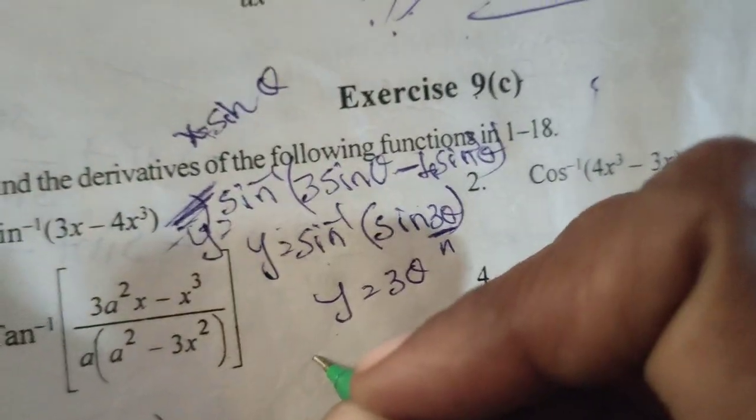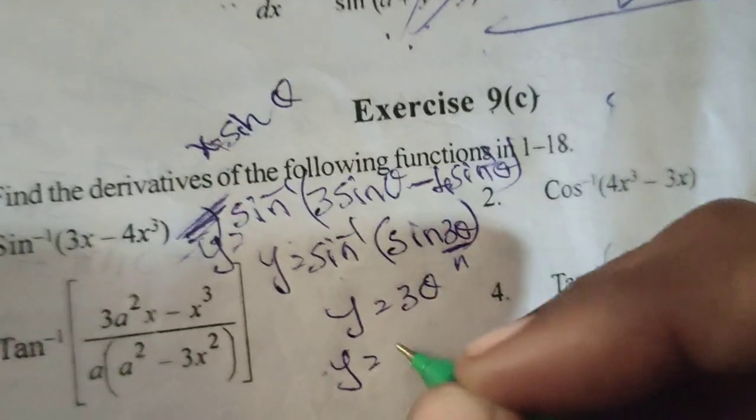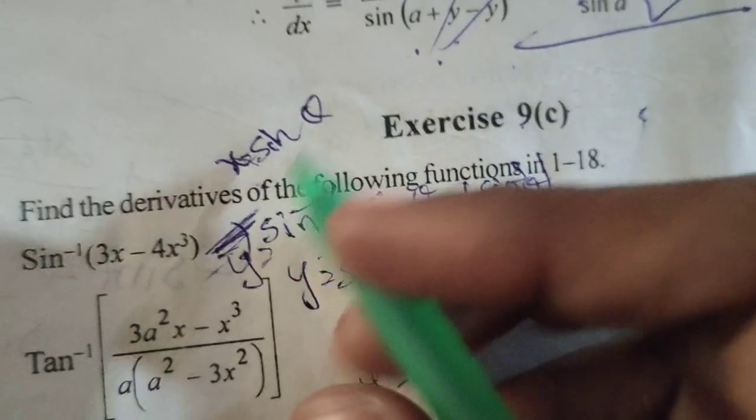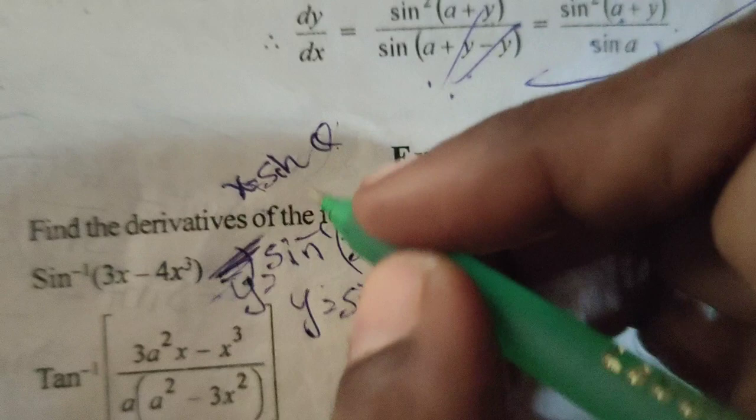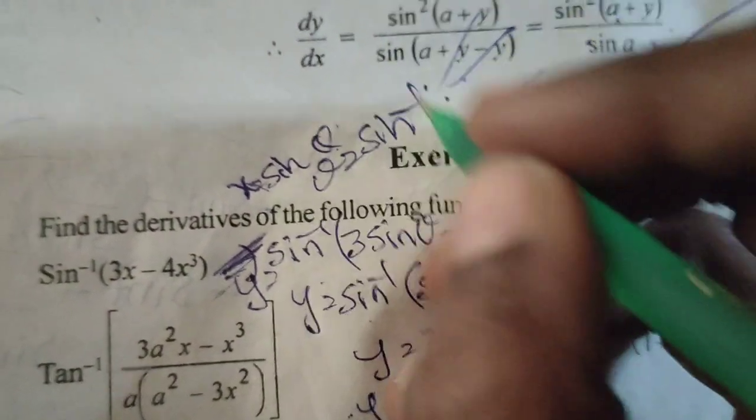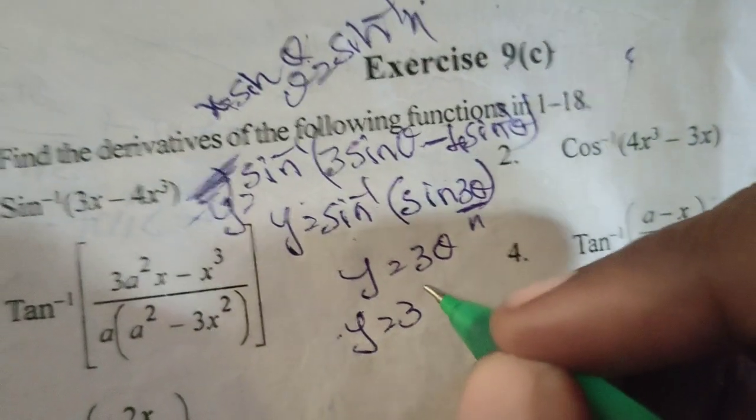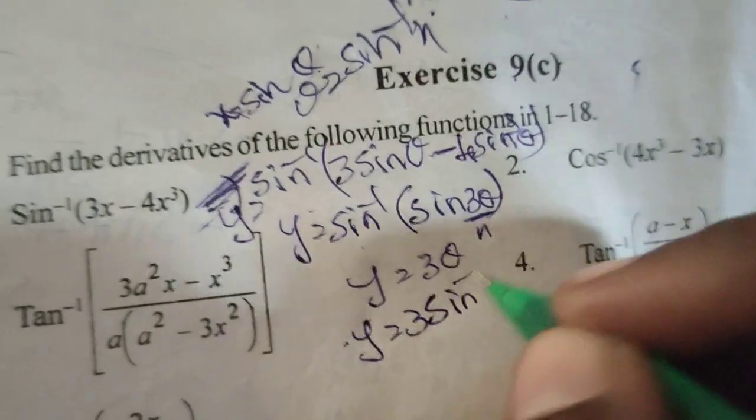y equals 3 theta. Now differentiate this. y equals 3 times, and x equals sine theta. Then theta equals sine inverse x. So 3 times sine inverse x.